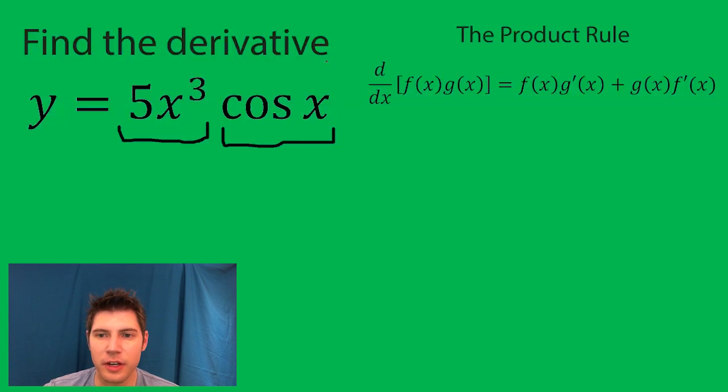So f(x), we're just going to rewrite 5x³, and then g'(x) - we want the derivative of this. The derivative of cosine is negative sine, and then just plus for this plus here.